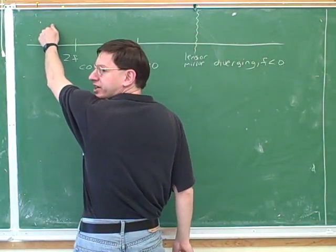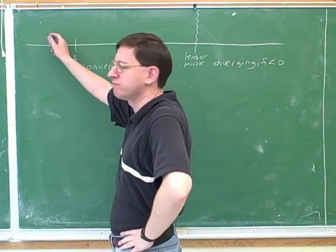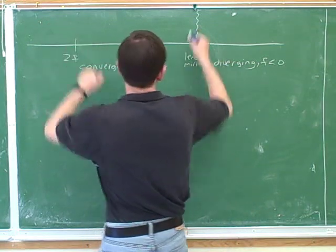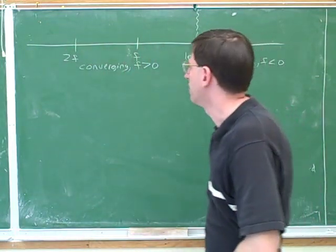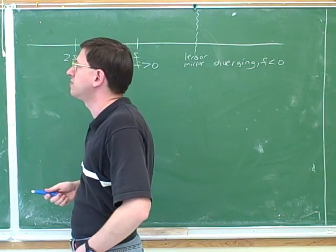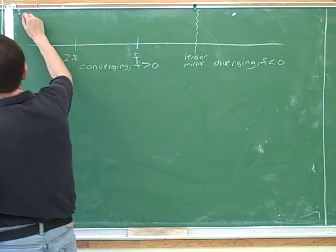It turns out that if you have a converging device and you put the object here—it means you put the object more than two focal lengths away from the lens or mirror. Well, it turns out that when you put the object here, the image is always inverted, real, and shrunk, always.